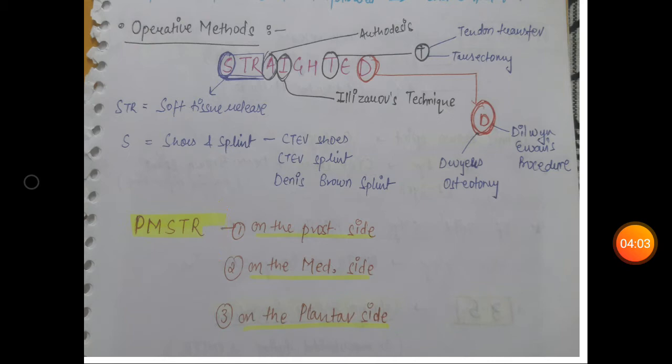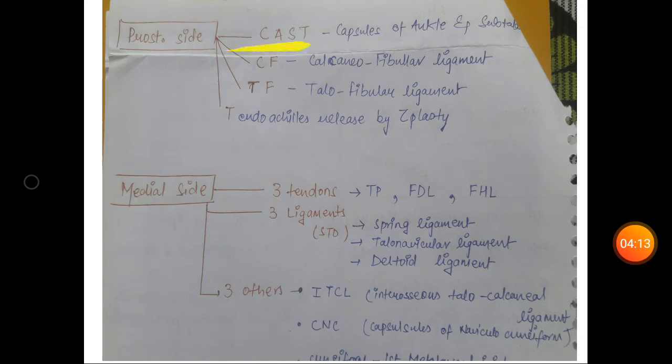Posteromedial soft tissue release: you will release soft tissue on posterior side, medial side, and plantar side. On the posterior side, you release CAST: capsules of ankle and subtalar joint, calcaneofibular ligament, talofibular ligament, and tendo Achilles by Z-plasty.